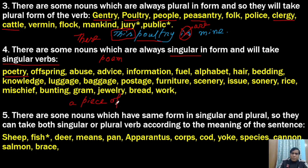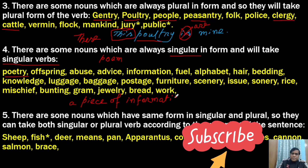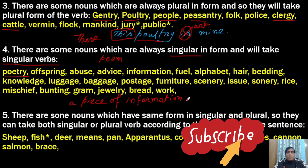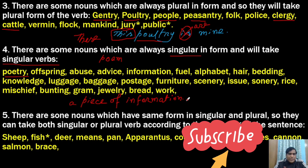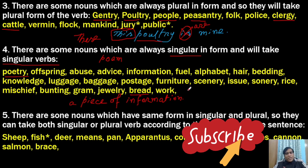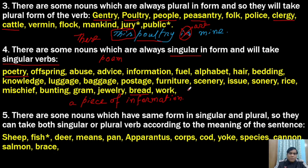For example, 'a piece of information' — that is how you use it. Similarly, 'a slice of bread.' Bread is actually uncountable. Countable versus uncountable is a concept that has already been discussed in a previous video.